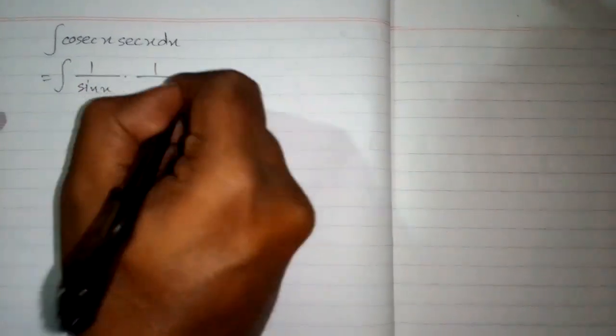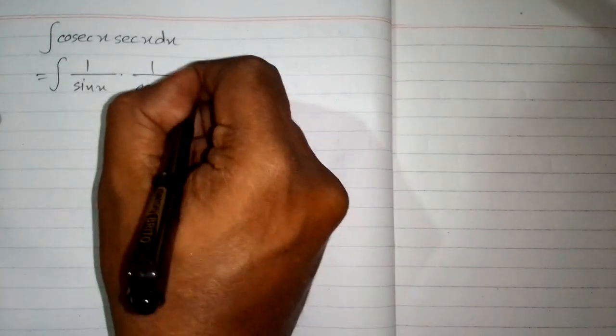In this video we will find the integral of cosecant of x multiplied by secant of x. We know that cosecant of x is 1 upon sin x and secant of x is 1 upon cos x, so we write the integral of 1 over sin x times 1 over cos x dx.